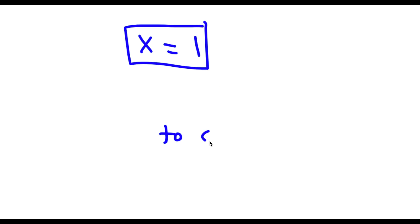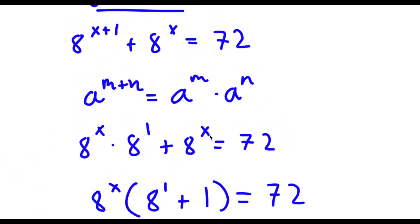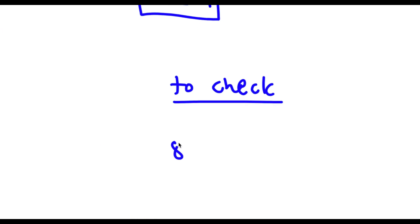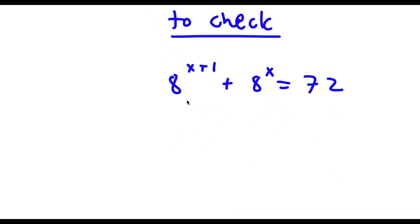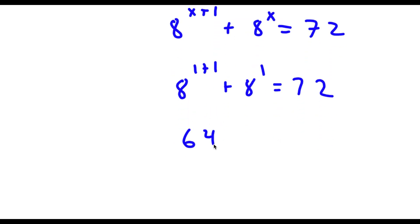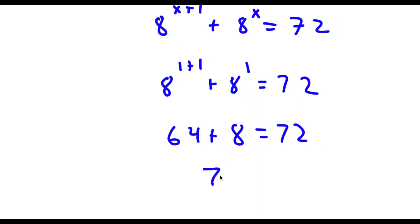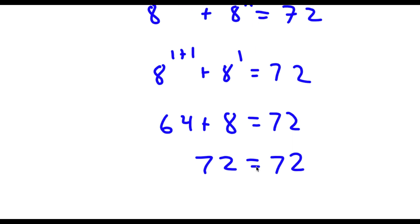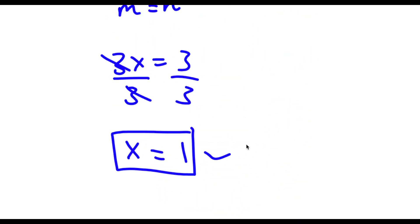So now to check: I have 8 to the power of x plus 1 plus 8 to the power of x is equal to 72, and I know that x equals 1. So 8 to the power of 1 plus 1 plus 8 to the power of 1 is equal to 72. 8 to the power of 2 is 64, plus 8 to the power of 1 is 8, equals 72. 64 plus 8 is 72, so 72 equals 72 — my solution is right.